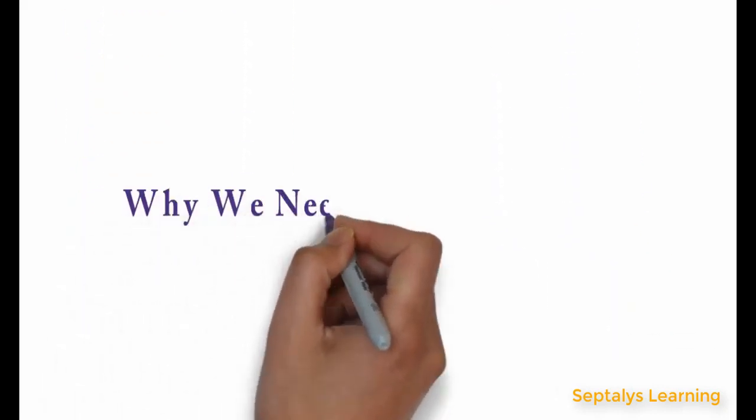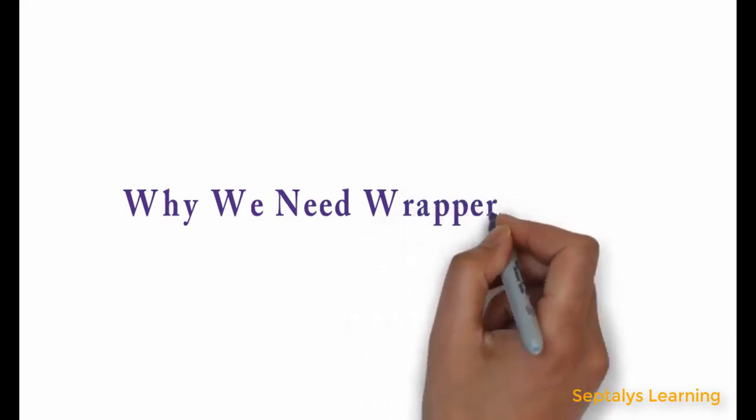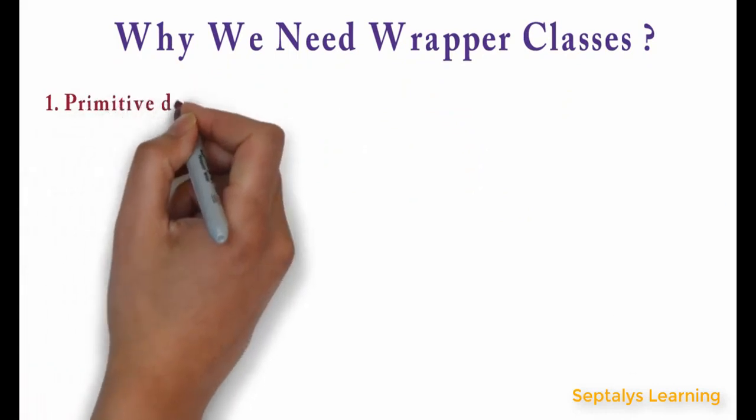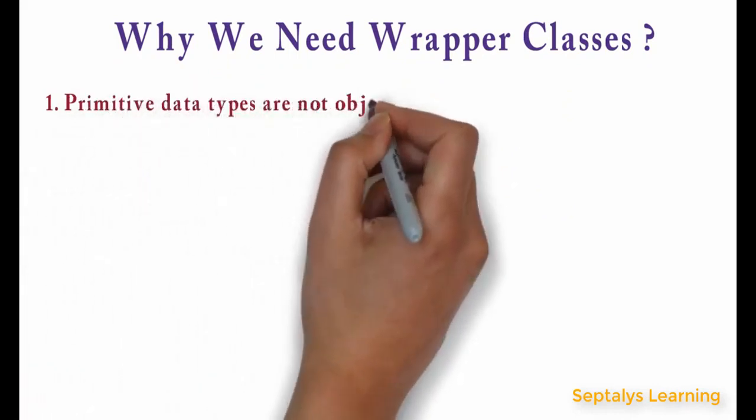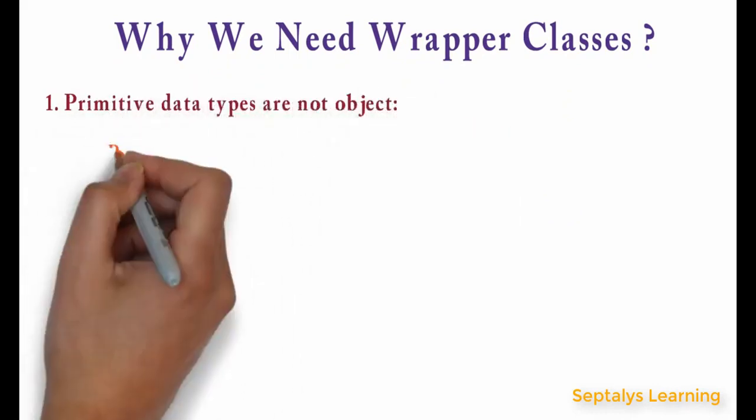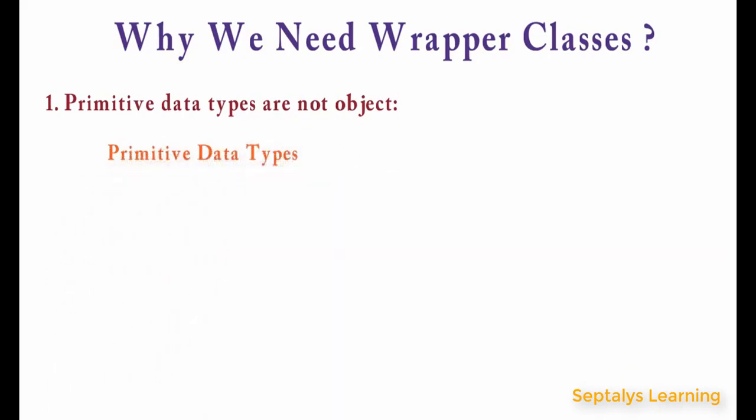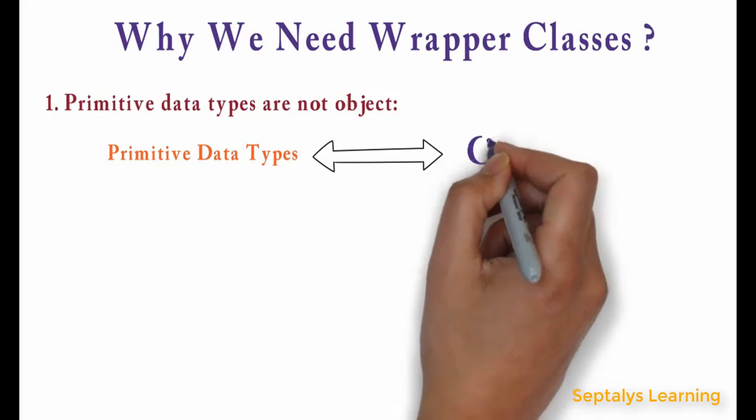Now why do we need wrapper classes? First reason is primitive data types are not objects. Java has primitive data types that do not belong to any class. So sometimes it is required to convert data types into objects.